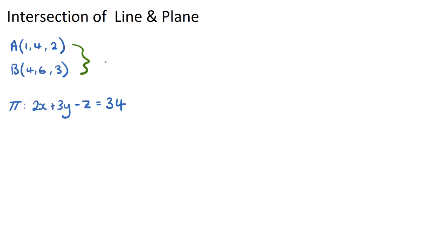The vector equation of a line L will be in the form R equals A plus TB, where A is our position vector and B is our direction vector.